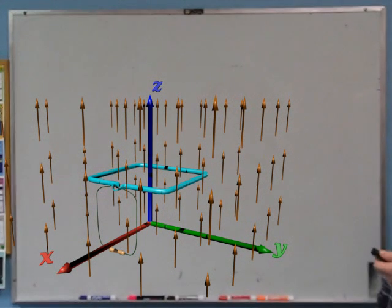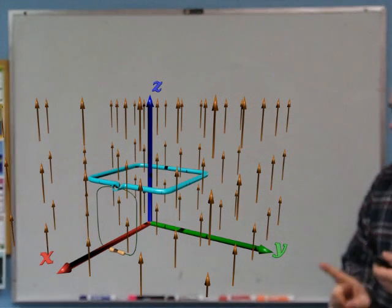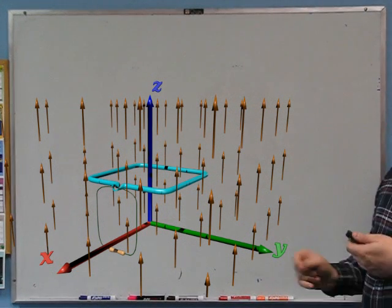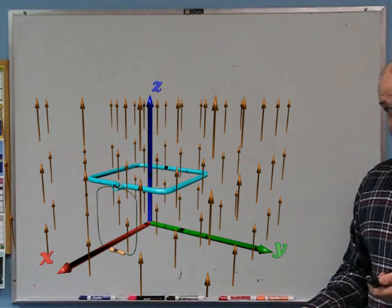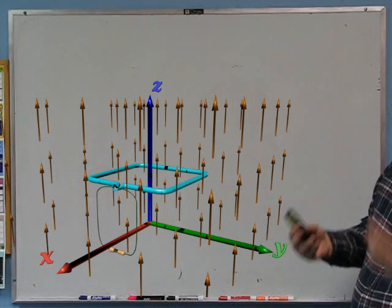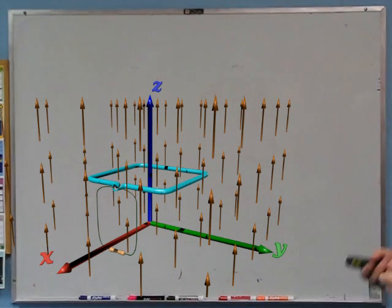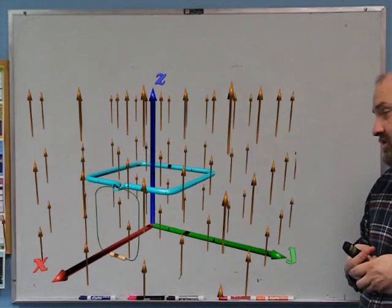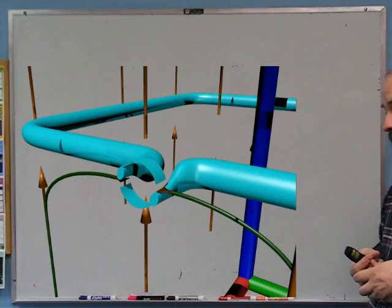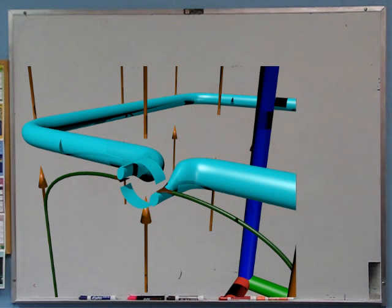The loop of current is the generator and the resistor is what we want to generate current through — in reality, this could be a washing machine, computer, TV, or whatever you feel the need to run electric current through at home. Notice the connection to the wires through the commutator, as we discussed in class.